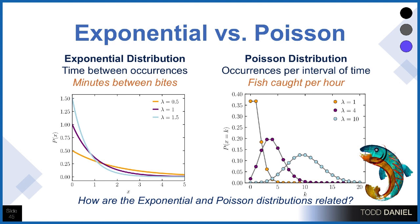So if we're spending spring break on the lake doing some fishing, the number of fish caught per hour would follow a Poisson distribution — occurrences per interval of time. But the exponential distribution is the time between occurrences: the number of minutes that elapses between bites, between strikes on the line of a fish that may potentially end up in the boat.